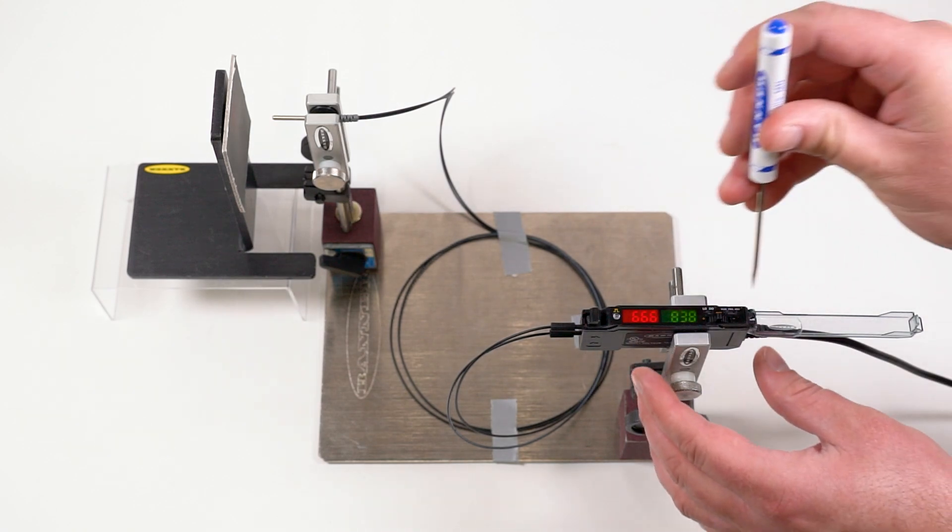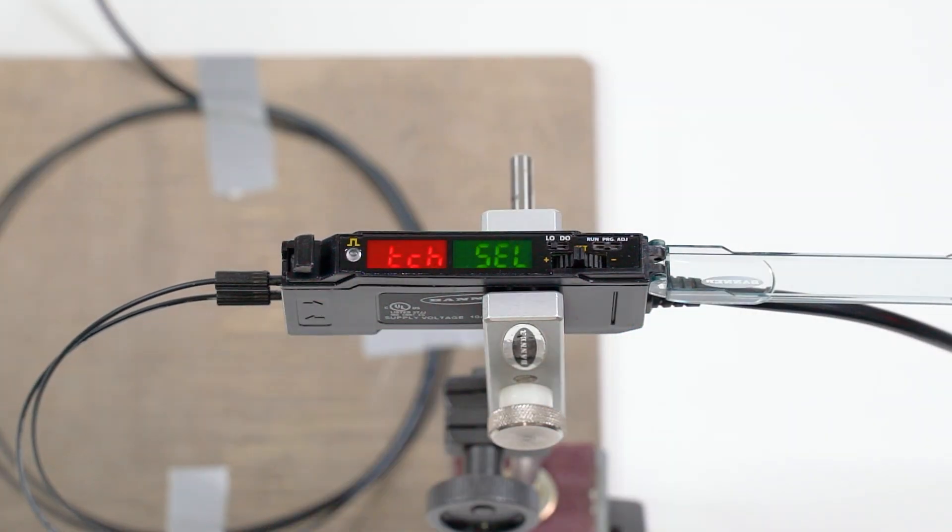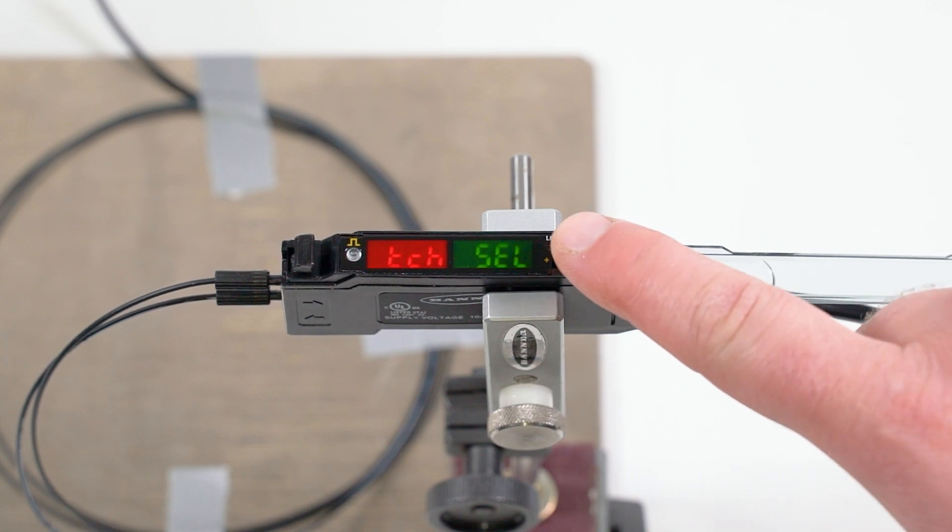Move the mode switch to PRG to access the program mode menu. Use the rocker button to toggle between options until you see the Teach selection option and press down on the button.